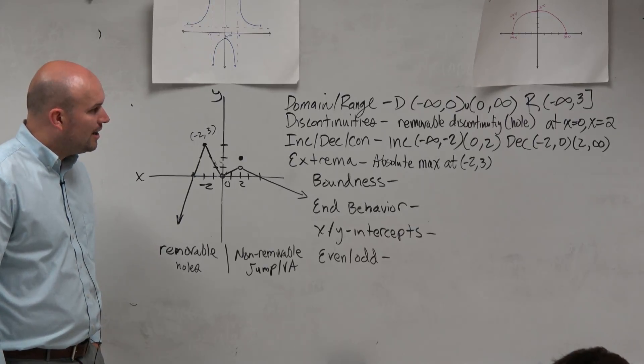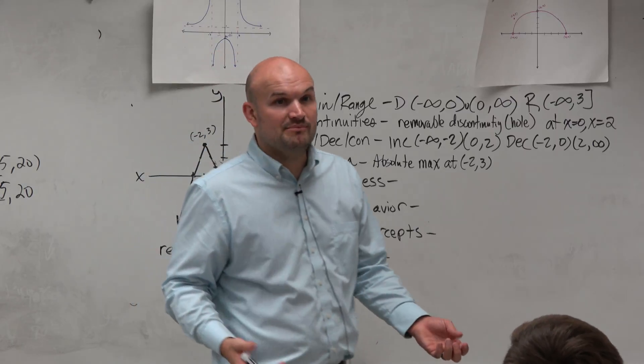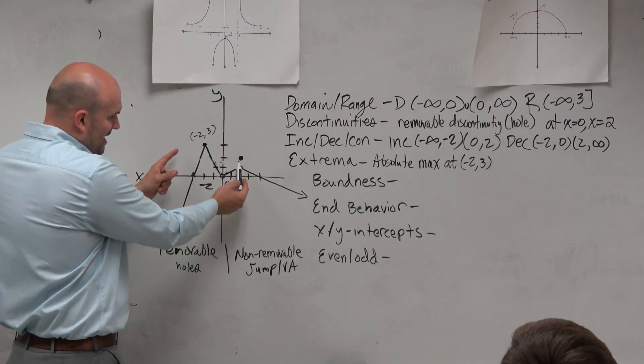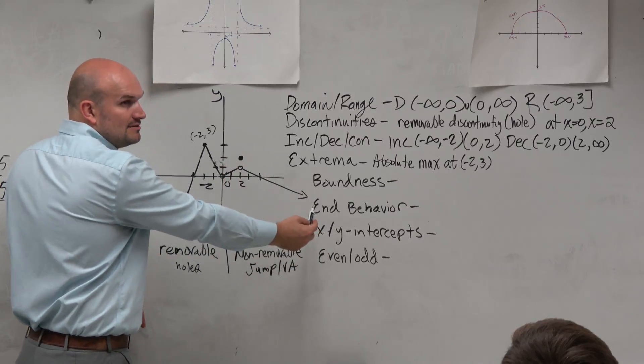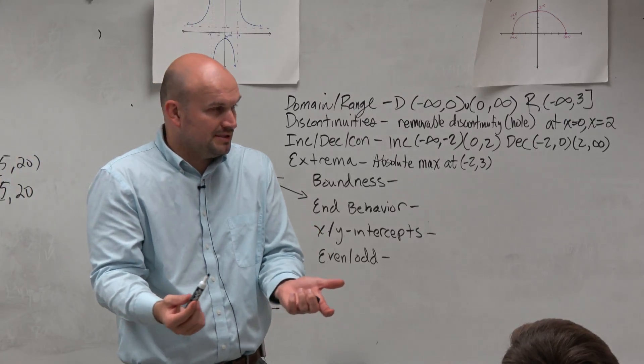All right. Now, so it has an absolute maximum. Now let's look, is there an absolute minimum? Is there like a lowest that the graph goes? And you guys can see that this graph continues going down, down, down, right? So it never actually reaches an absolute minimum. So there is no absolute minimum in this graph.